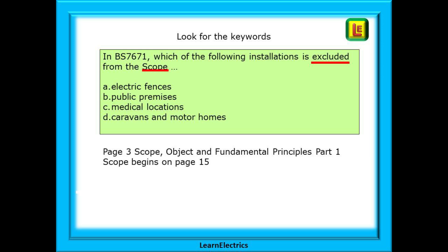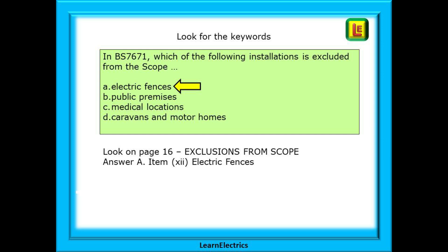At the top of page 3 we can see 'scope, object and fundamental principles'. This is part 1 of the regulations, and below that title is Chapter 11, Scope, on page 15. Page 15 details installations that are included, but we want the excluded installations. Turn the page to page 16 and halfway down the page we have 'Exclusions from the Scope'. Look down the list and search for each of the possible answers in turn. When you get to item number 12, there is 'electric fences' — and that is your answer, answer A.